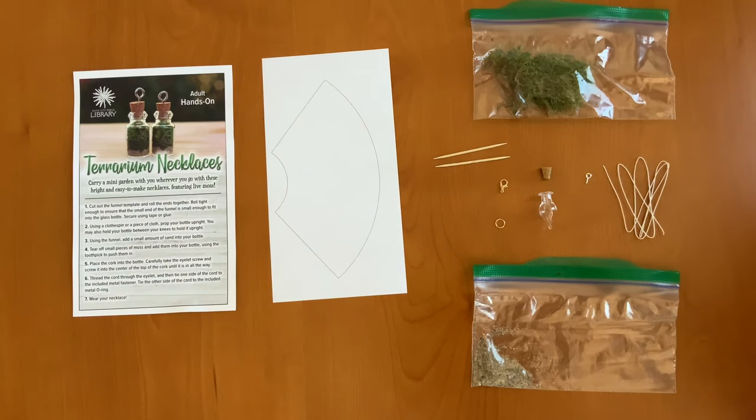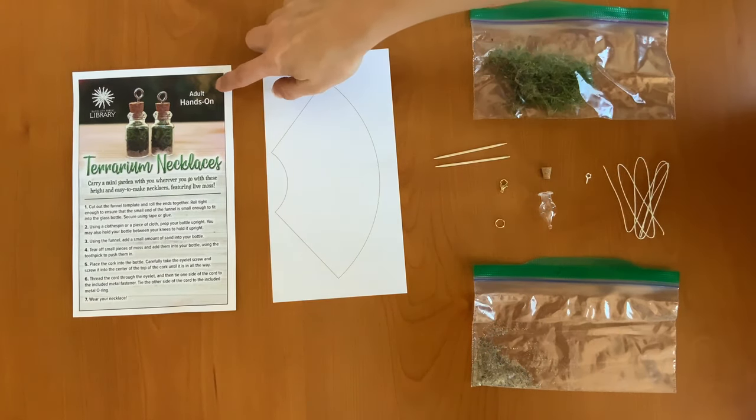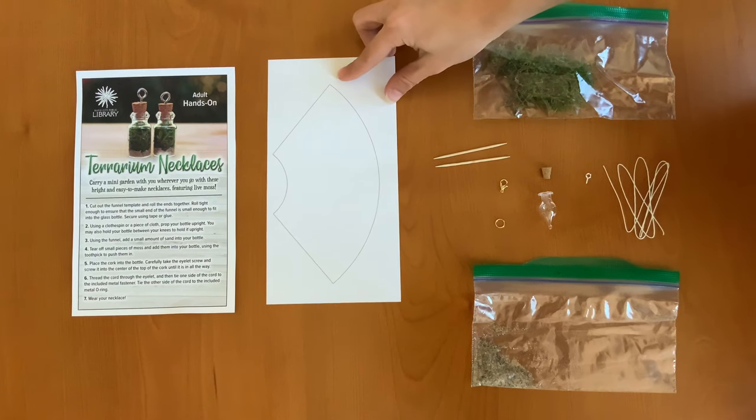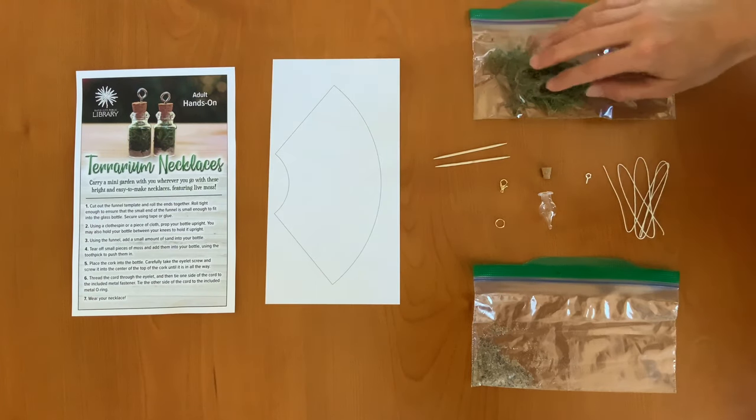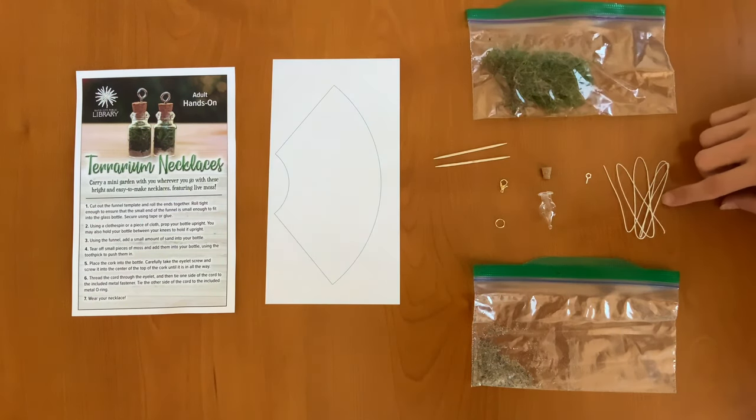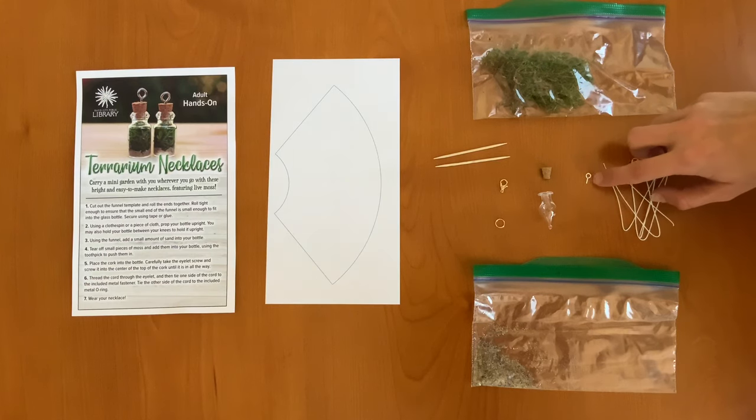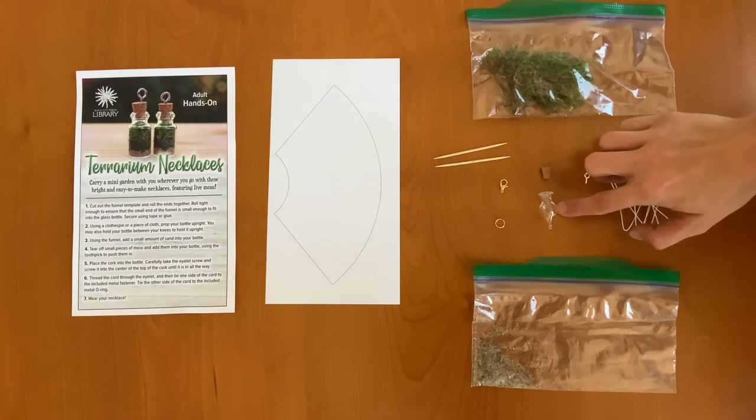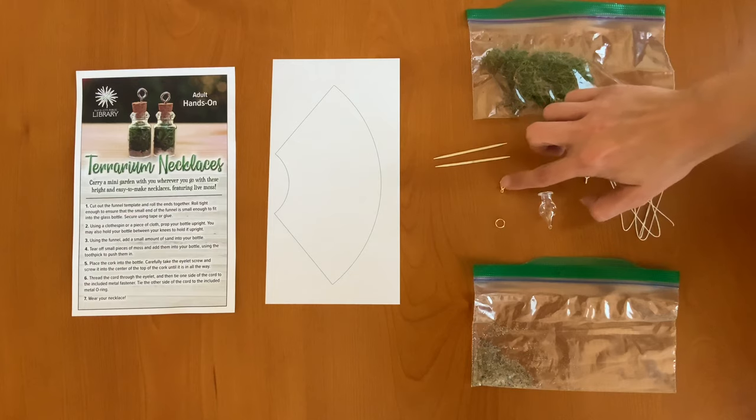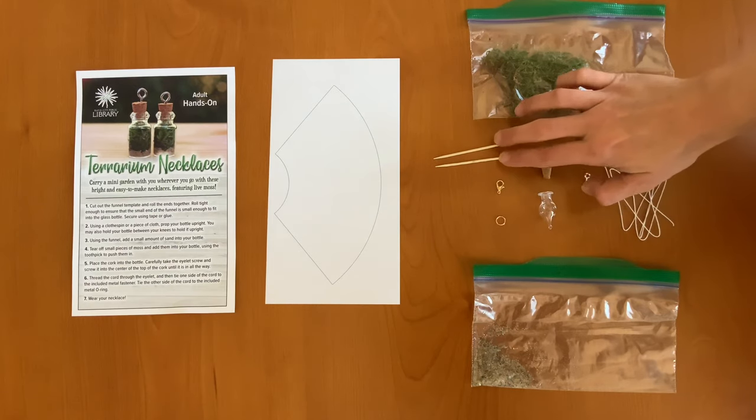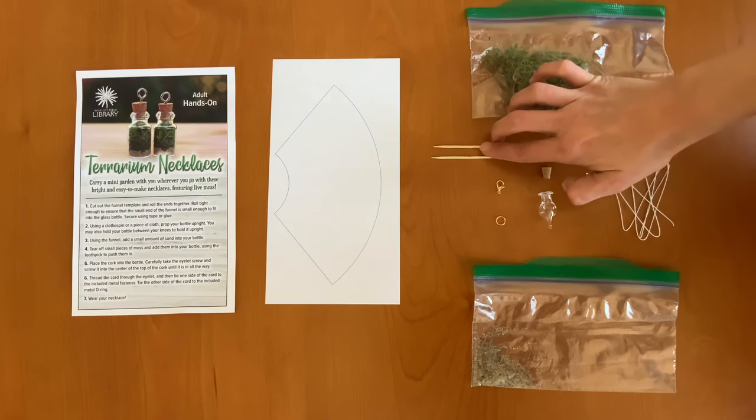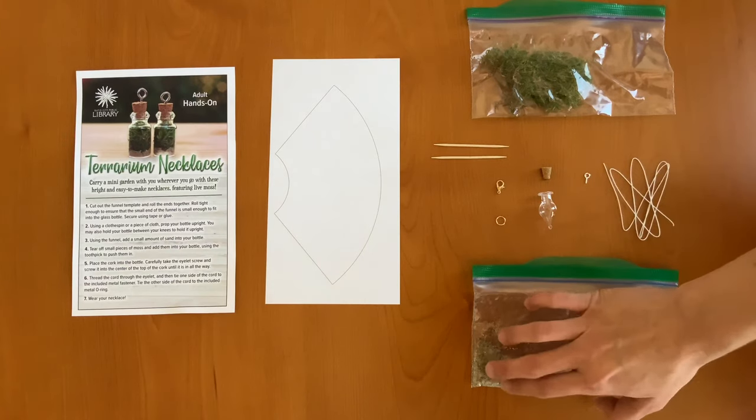In your craft kit you should have some instructions, a funnel template, moss, some string for your necklace, an eyelet screw, a mini vial and a cork, a fastener and an o-ring, two toothpicks, and some sand.